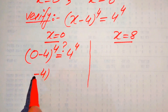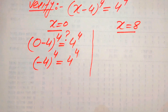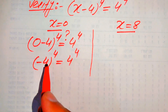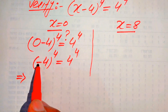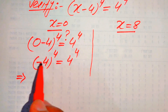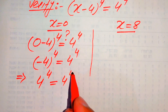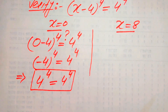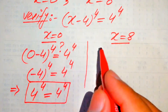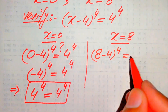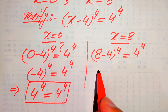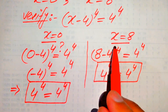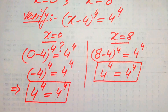Since the base is minus 4 and the exponent is an even number (4), it becomes positive, giving 4 to the power of 4 equals 4 to the power of 4. This confirms x equals 0 satisfies the equation. For x equals 8: (8 minus 4) to the power of 4 equals 4 to the power of 4, which gives 4 to the power of 4 equals 4 to the power of 4. Both roots are verified. This is the final answer. Thank you for watching — please subscribe for more videos.